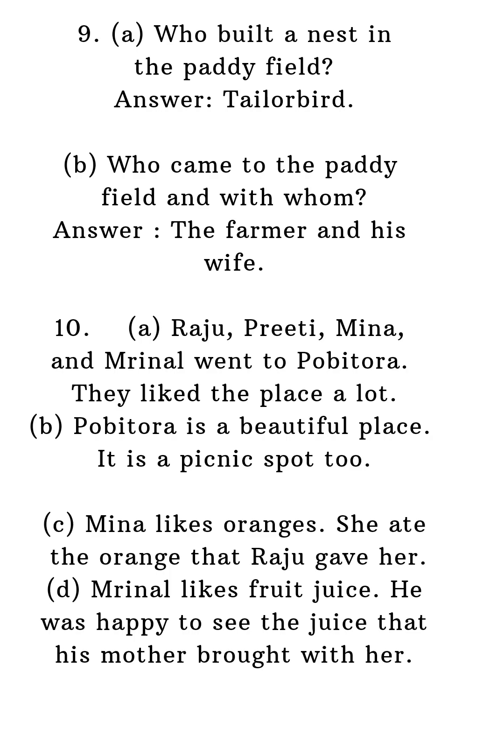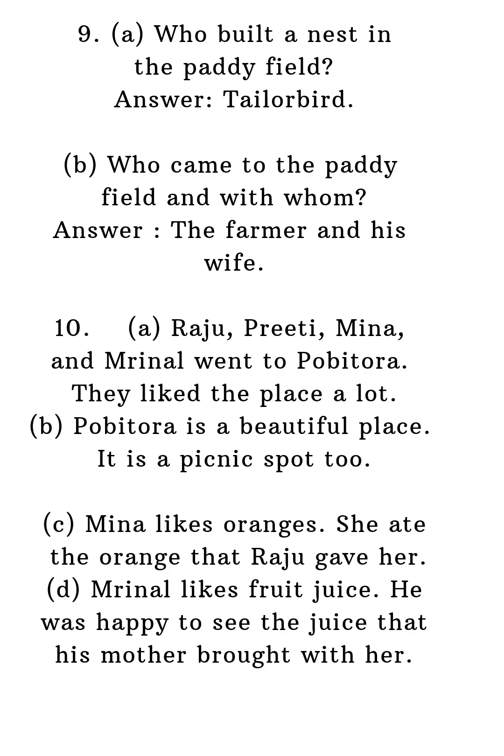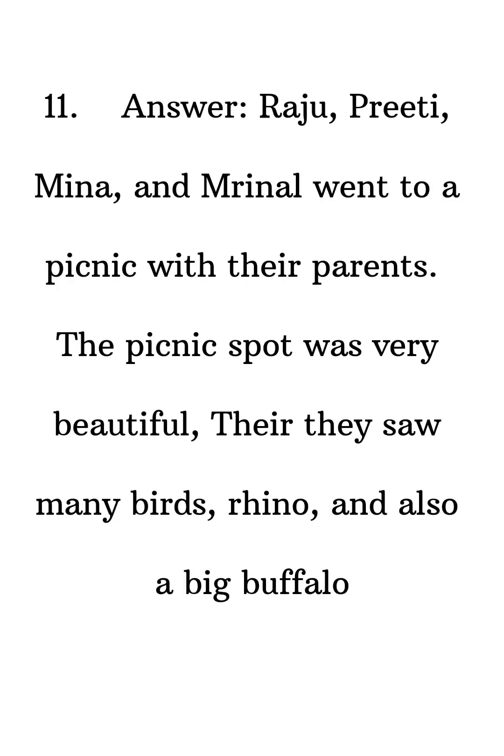A. Raju, Riti, Meena and Renan went to Pobitura. They liked the place a lot. B. Pobitura is a beautiful place. It is a picnic spot too. C. Meena likes oranges. She ate the orange that Raju gave her. D. Renan likes fruit juice. He was happy to see the juice that his mother brought with her. Answer: Raju, Riti, Meena and Renan went on a picnic with their parents. The picnic spot was very beautiful. There they saw many birds, rhino and also a big buffalo. Have a good day. Thank you.